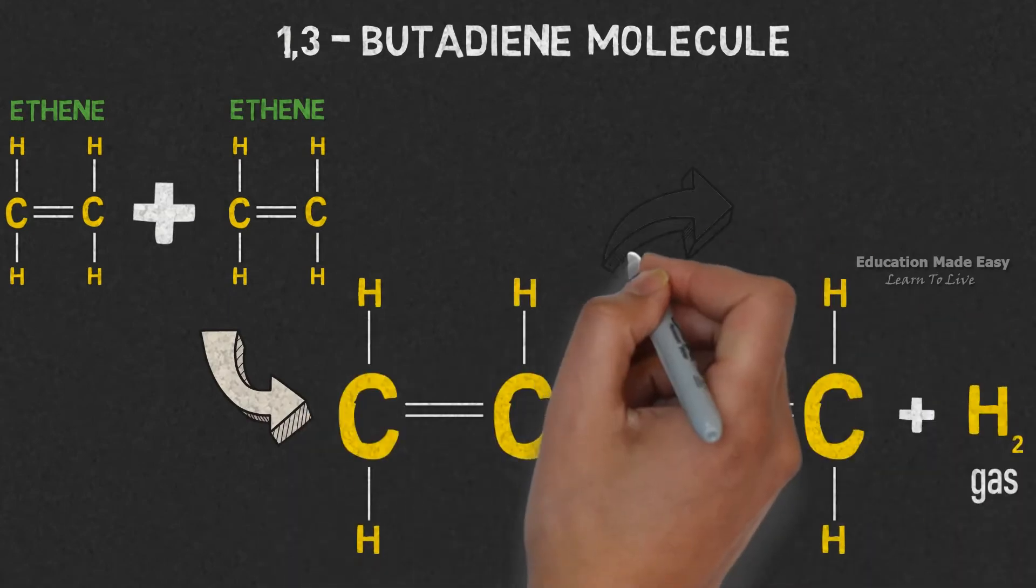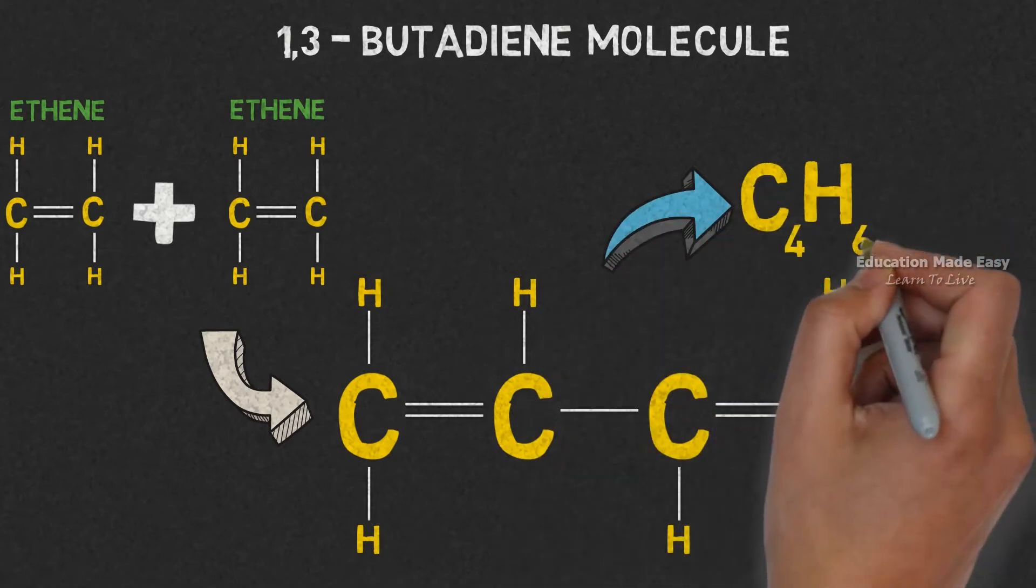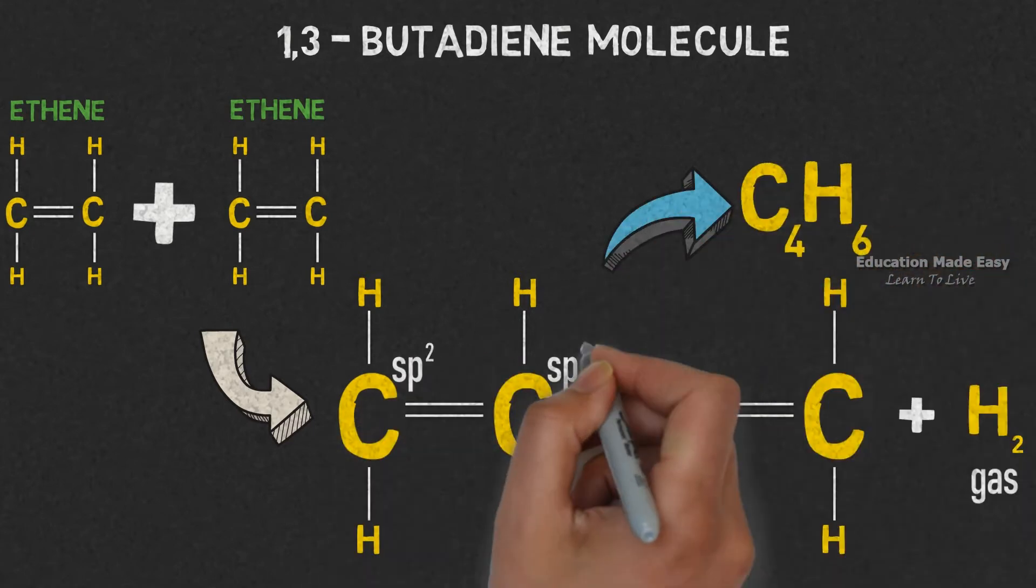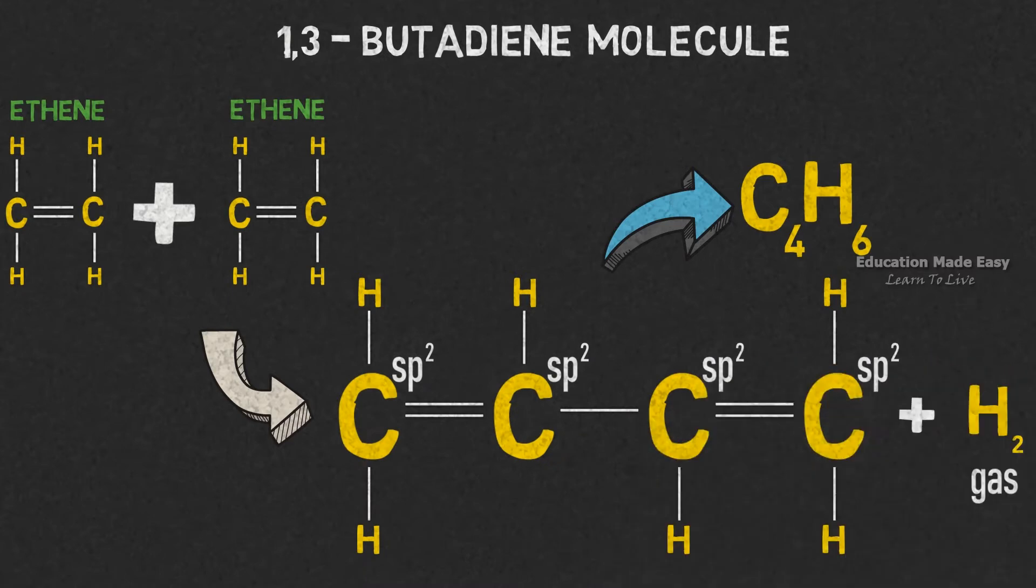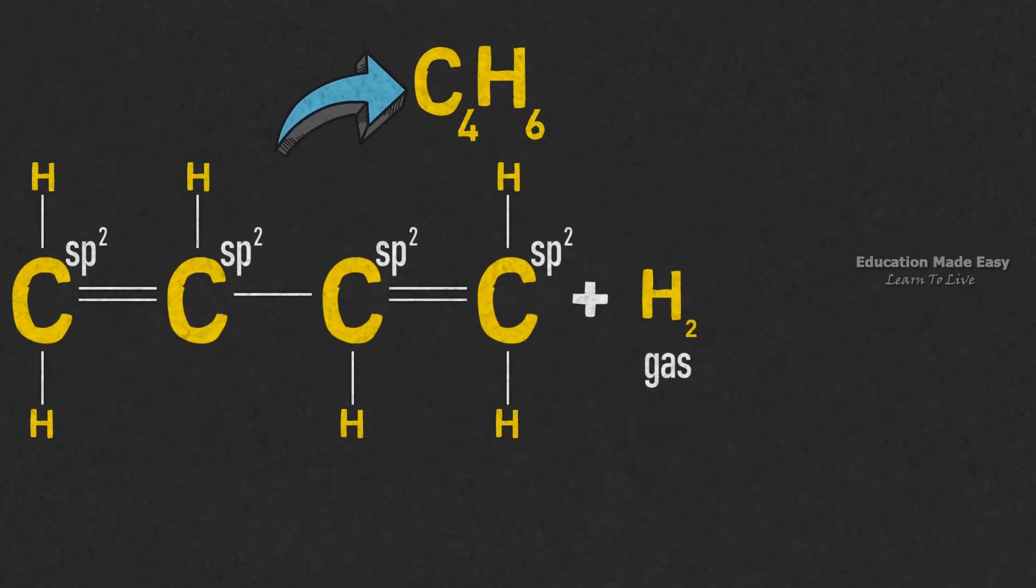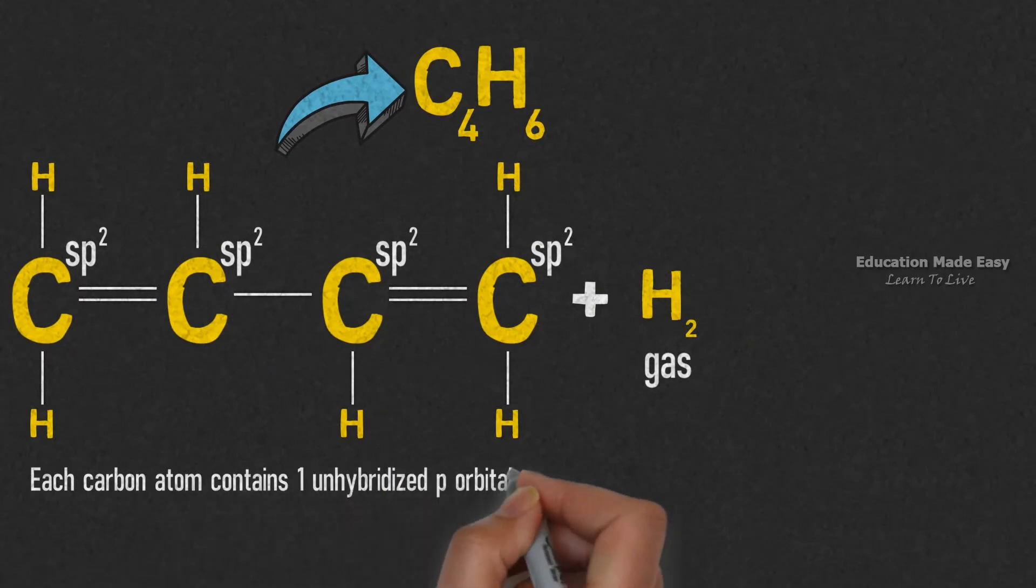The chemical formula of 1,3-butadiene is C4H6. 1,3-butadiene molecule contains four carbon atoms in sp2 configuration, which means each carbon atom has one unhybridized p orbital.